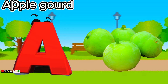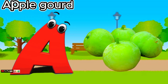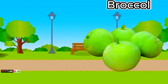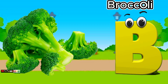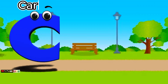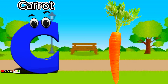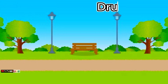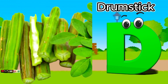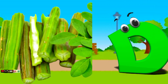A is for apple gourd. A, a, apple gourd. B is for broccoli. B, b, broccoli. C is for carrot. C, c, carrot. D is for drumstick. D, d, drumstick.